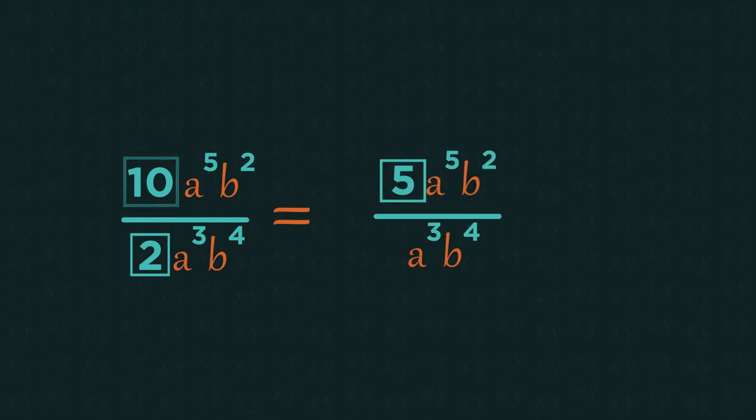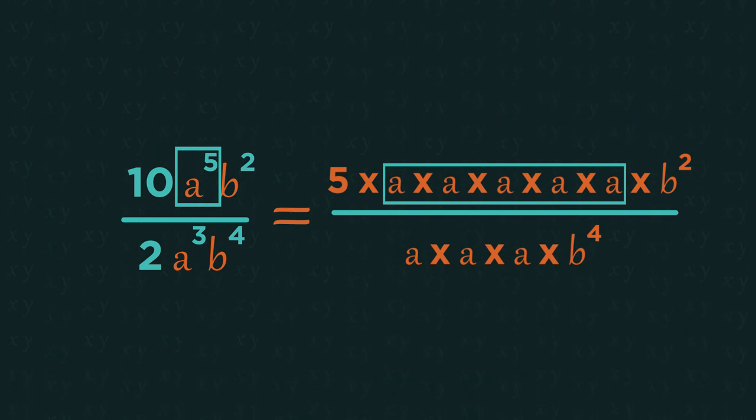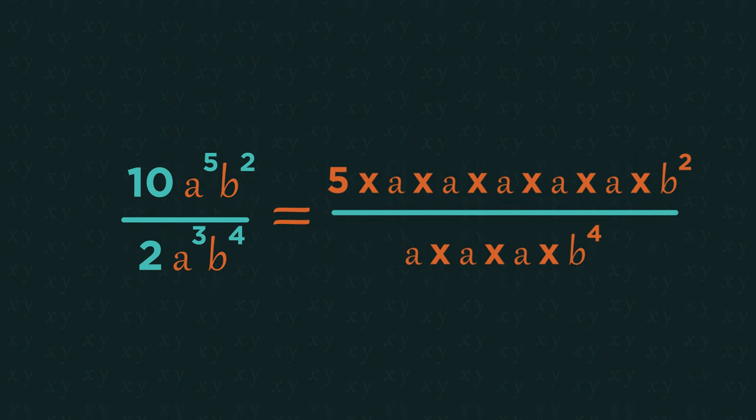And then, because we have 5 a's in the numerator, and there are 3 in the denominator, this means we can cancel out 3 of the a's from both the numerator and denominator, leaving just 2 a's in the numerator.